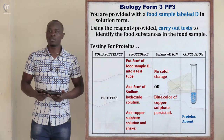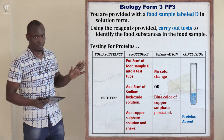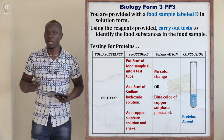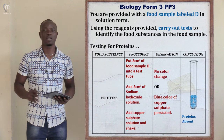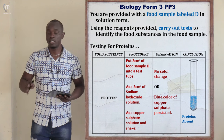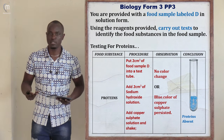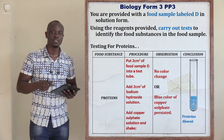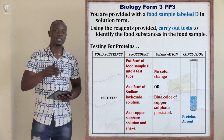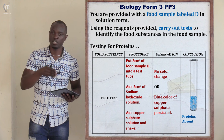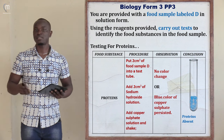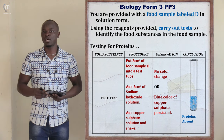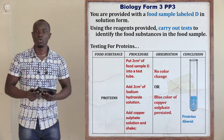For the protein test observations, there was no color change — the blue color of copper 2 sulfate persisted and did not change. The conclusion is that protein is absent. For protein to be present, the blue color of copper 2 sulfate should change from blue to purple. Since the color remained blue, protein was absent.